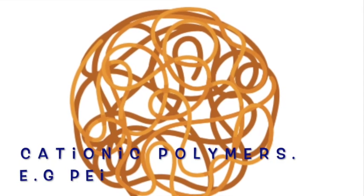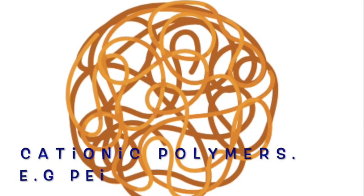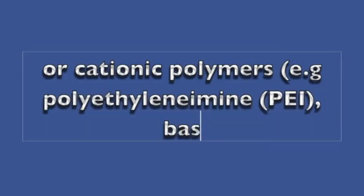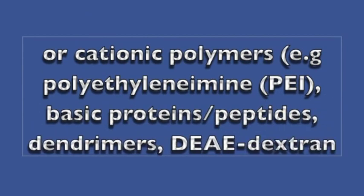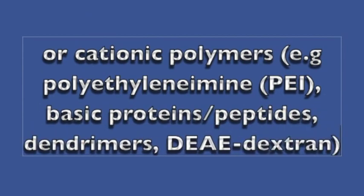There are also cationic polymers such as polyethylenimine, PEI. There are some basic proteins or peptides, dendrimers, DEAE dextran, which are all cationic polymers that do the same job and allow you to change the nucleic acid to positively charged and condense it as well so that the cell will take it up.